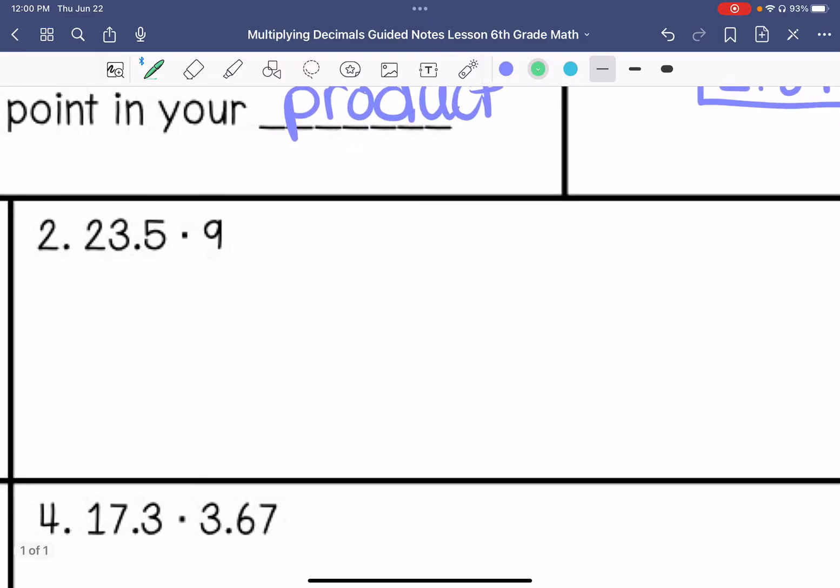Alright, number 2. We are going to line these up. It's important that you see multiplication problems done and written differently. 9 times 5 is 45. 9 times 3 is 27. Plus 4 is 31. 9 times 2 is 18. Plus that 3 is 21. I have 1 behind the decimal point. So my answer is 211.5.